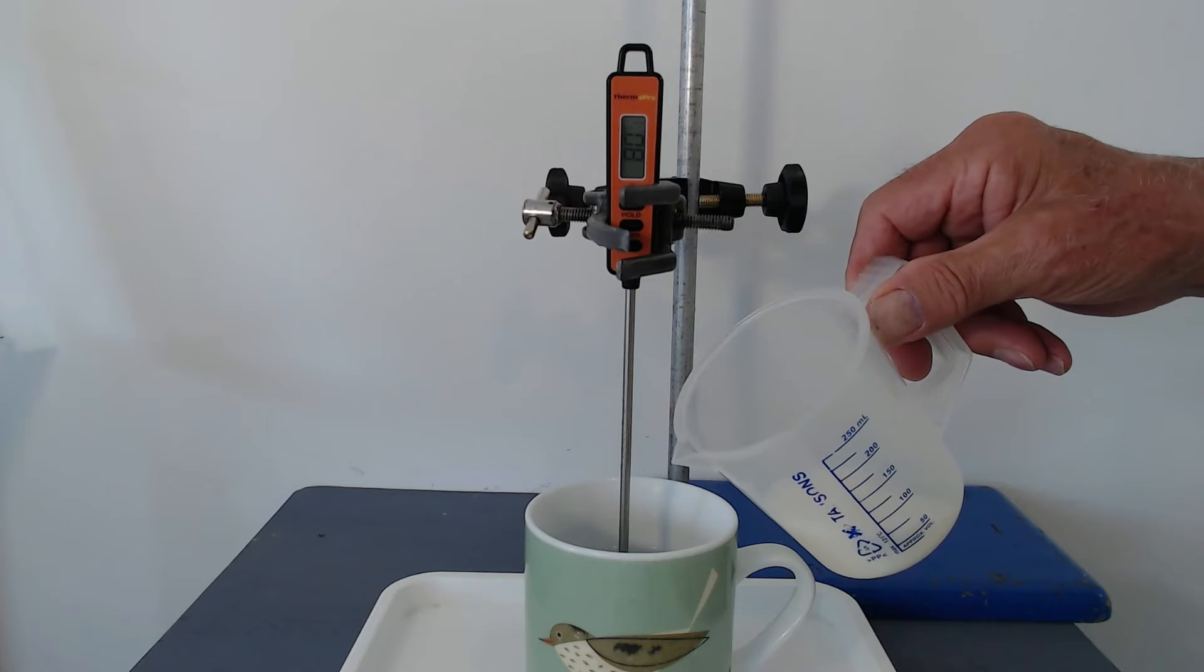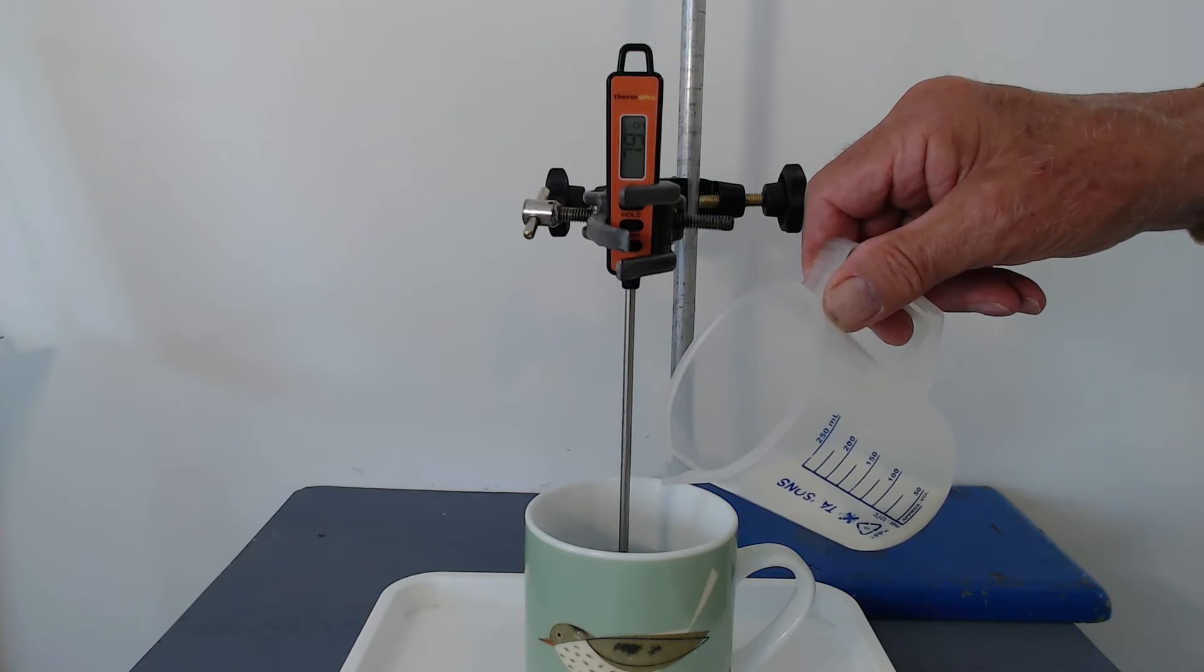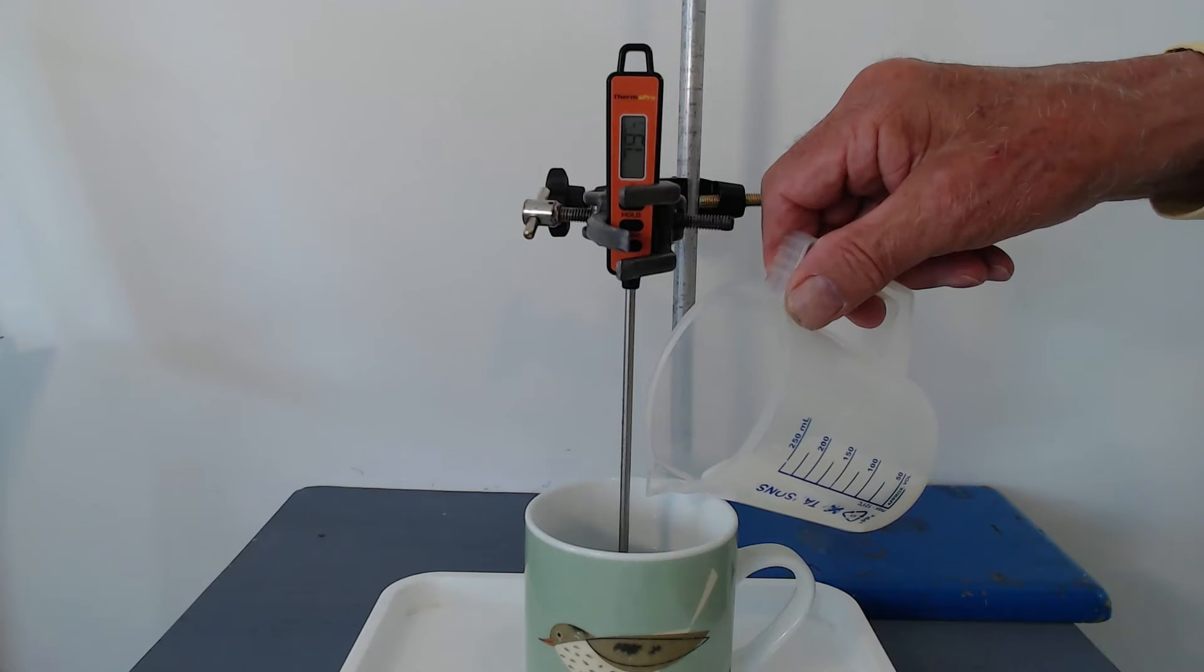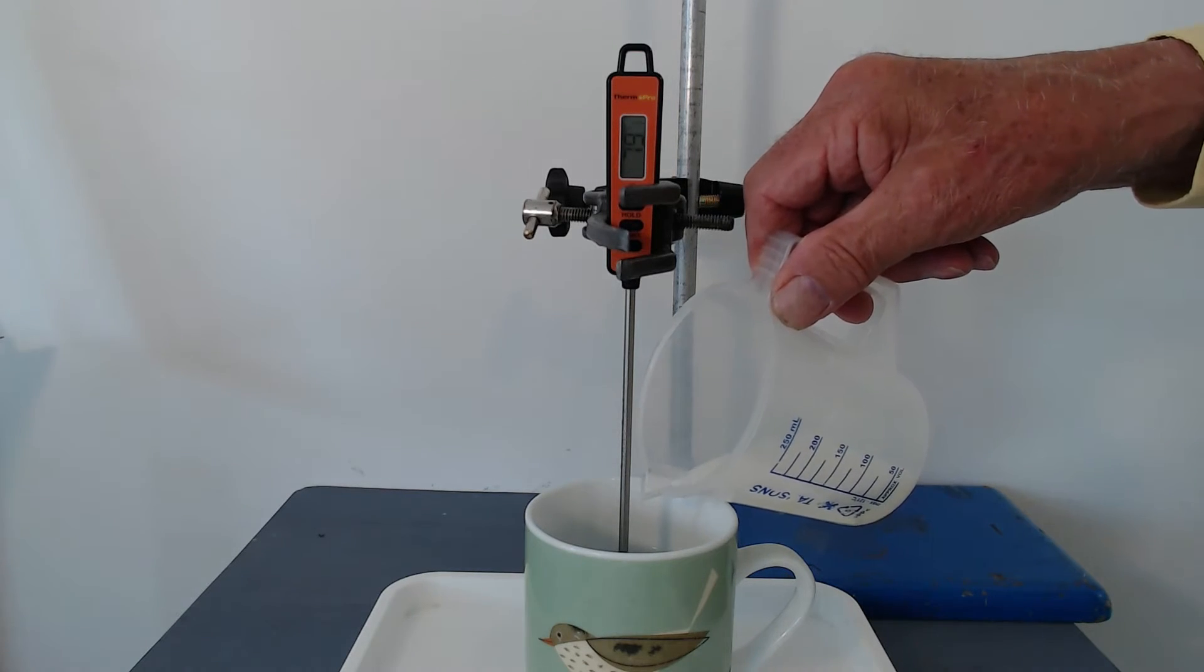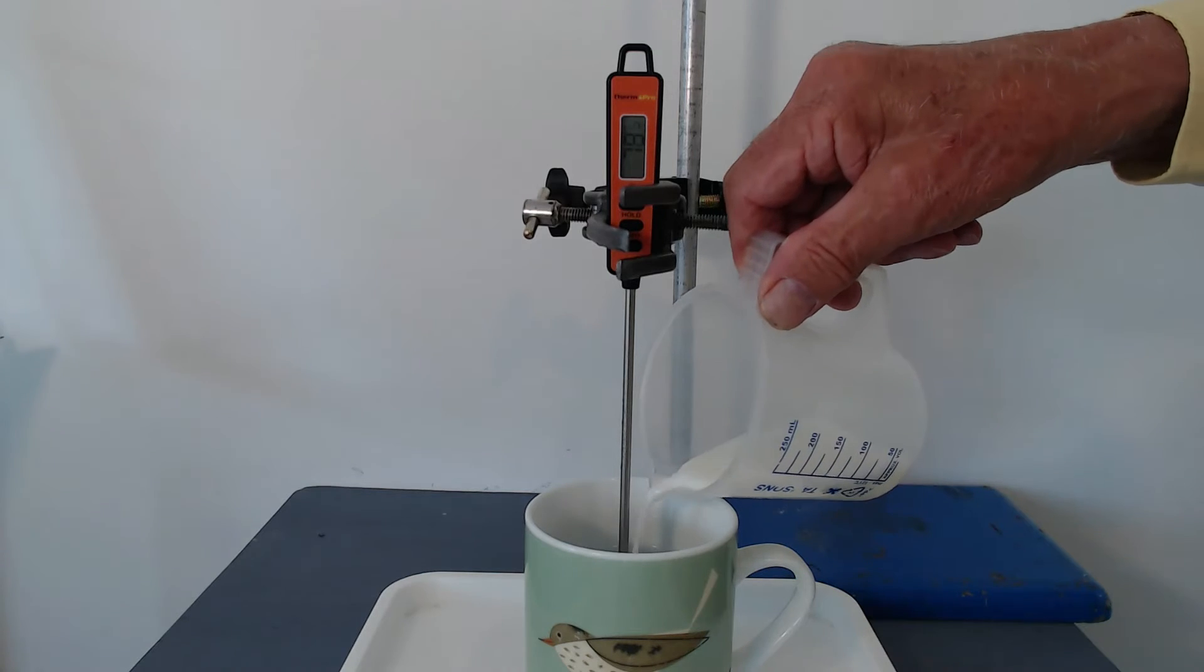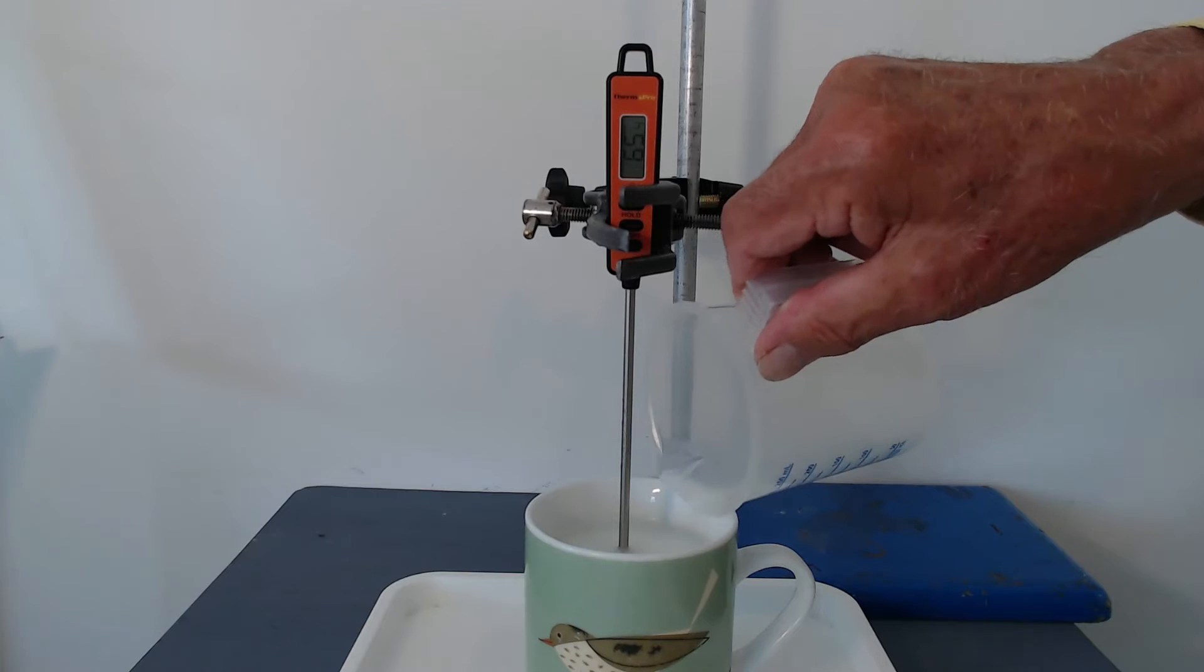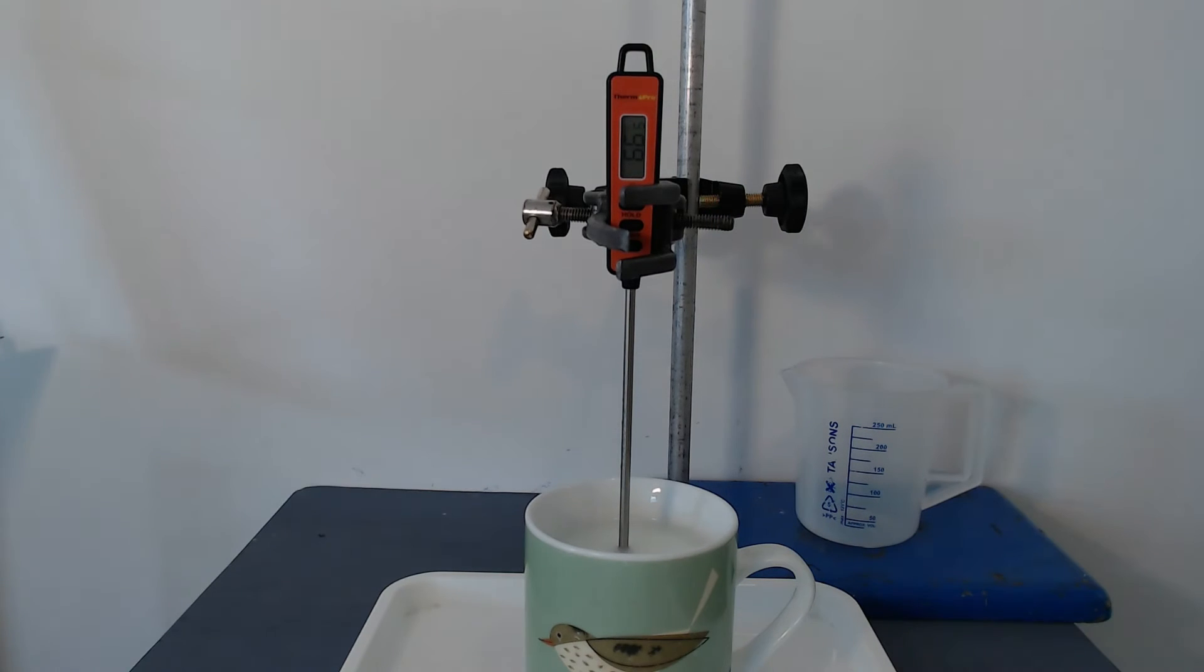And now we're going to approach the important point where I'm going to add my 50 milliliters of milk. I make it 7, 8, 9, 50. And if you started when I did, then you should be ready to notice the milk going in about now. And you'll see there's a sudden drop in temperature.